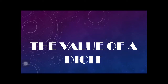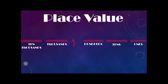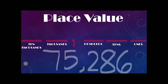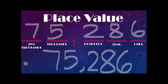Today we're going to study about the value of a digit. Let's have a quick review first about place value. For a five-digit number, we have the ones place, tens place, hundreds place, thousands place, and the ten-thousands place. For example, with 75,286: digit 6 is at the ones place, digit 8 at the tens place, digit 2 at the hundreds place, digit 5 at the thousands place, and digit 7 at the ten-thousands place.